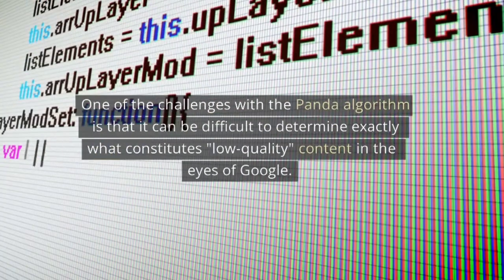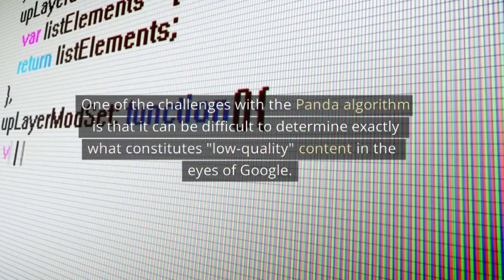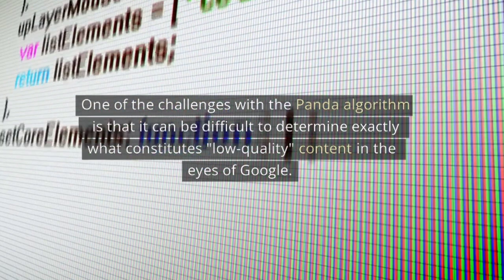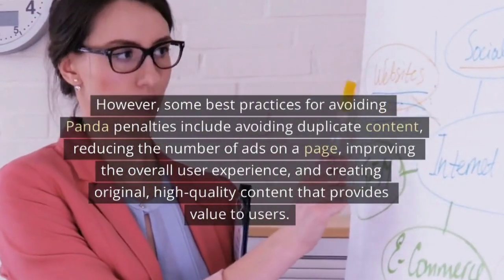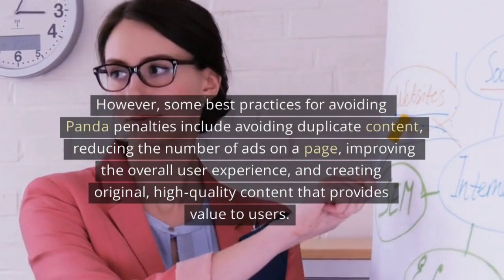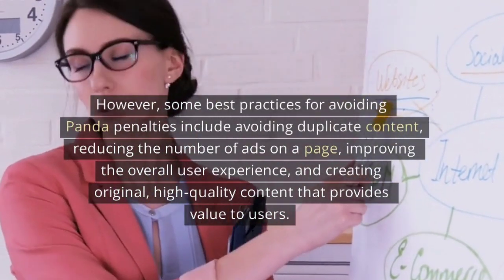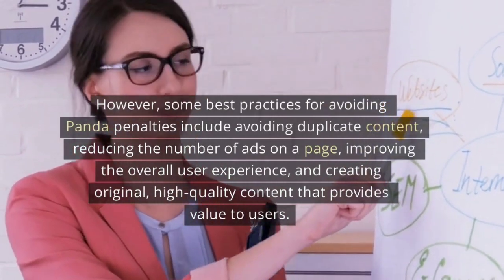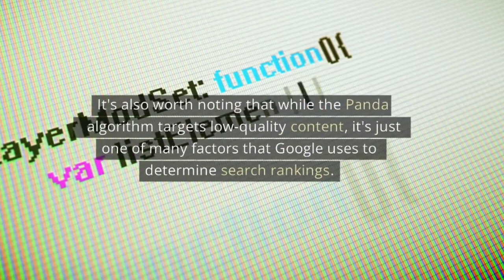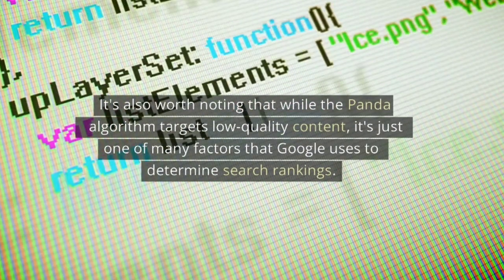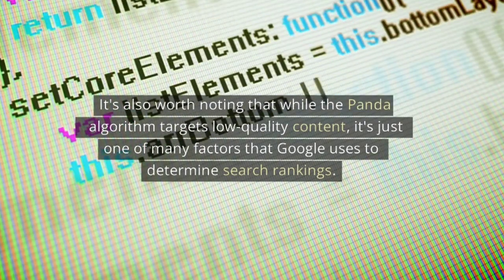One of the challenges with the Panda algorithm is that it can be difficult to determine exactly what constitutes low-quality content in the eyes of Google. However, some best practices for avoiding Panda penalties include avoiding duplicate content, reducing the number of ads on a page, improving the overall user experience, and creating original, high-quality content that provides value to users. It's also worth noting that while the Panda algorithm targets low-quality content, it's just one of many factors that Google uses to determine search rankings.